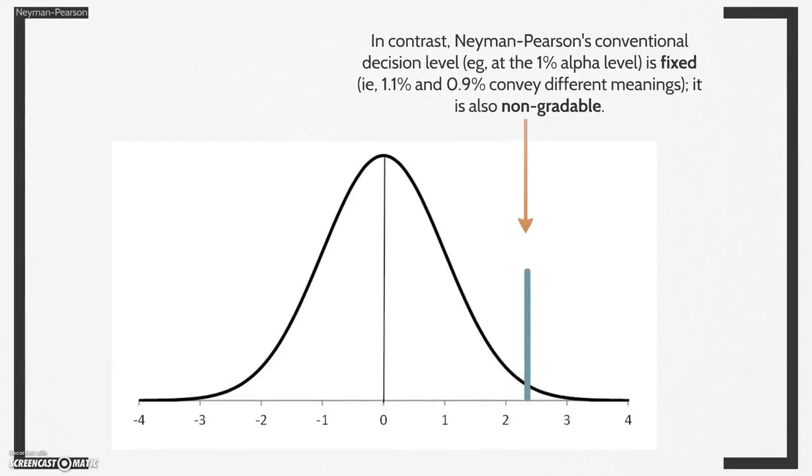In contrast, Neiman-Pearson's conventional decision level, for example at the 1% alpha level, is fixed. That is, 1.1% and 0.9% convey different meanings. It is also non-gradable. The question now is, well, apart from all these obvious differences, are there other testing differences to pay attention to?